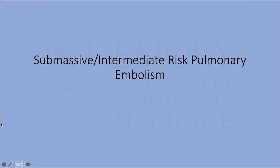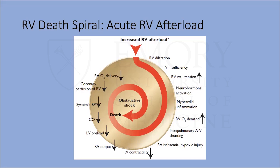With the PERT team activated and a submassive or intermediate-risk PE patient, we recognize the RV death spiral: increased PA pressure leads to increased right ventricular afterload, RV dilatation, tricuspid insufficiency, neurohormonal changes, myocardial inflammation, increased RV oxygen demand, RV ischemia, decreased RV contractility and output, decreased LV preload, reduced cardiac output, hypotension, decreased coronary perfusion — a catastrophic cascade. We want to intervene earlier to treat these patients.